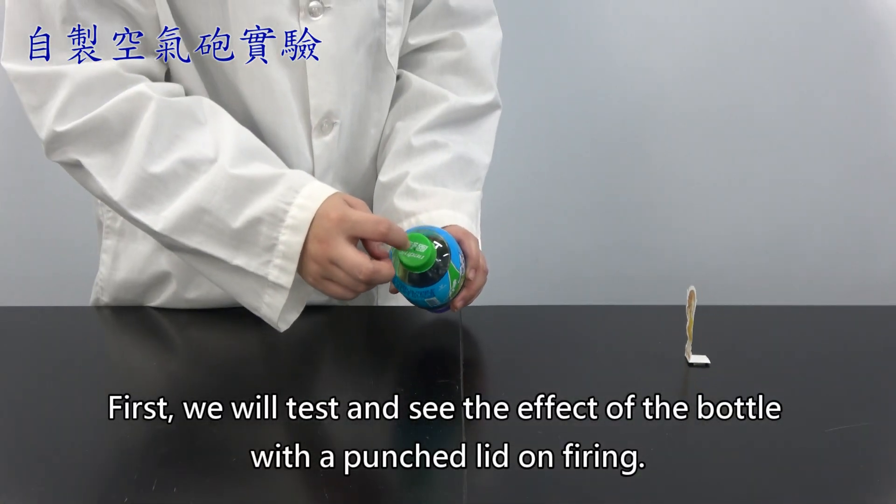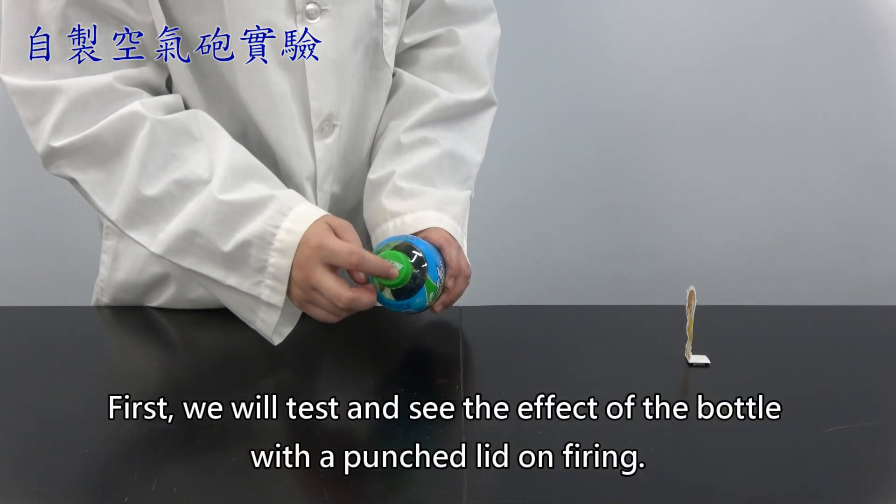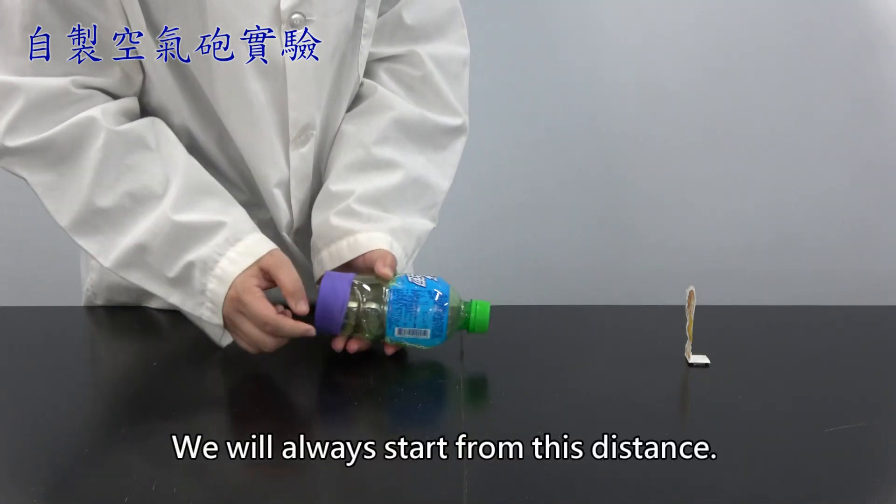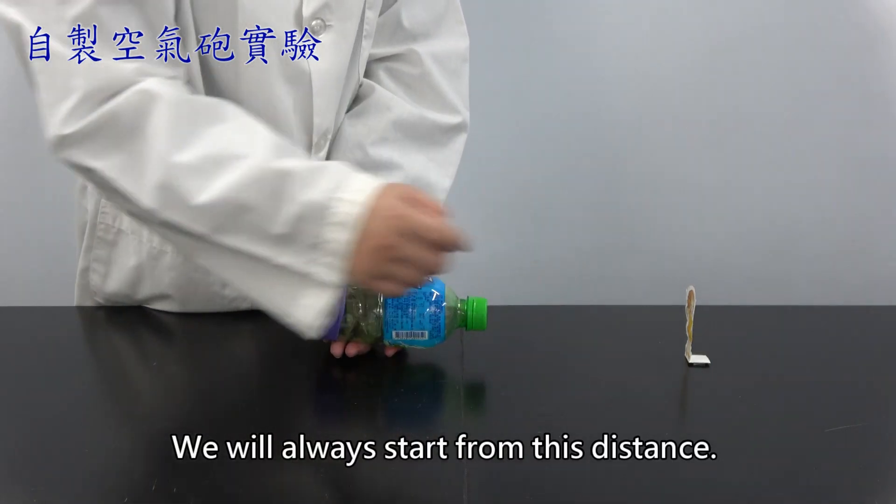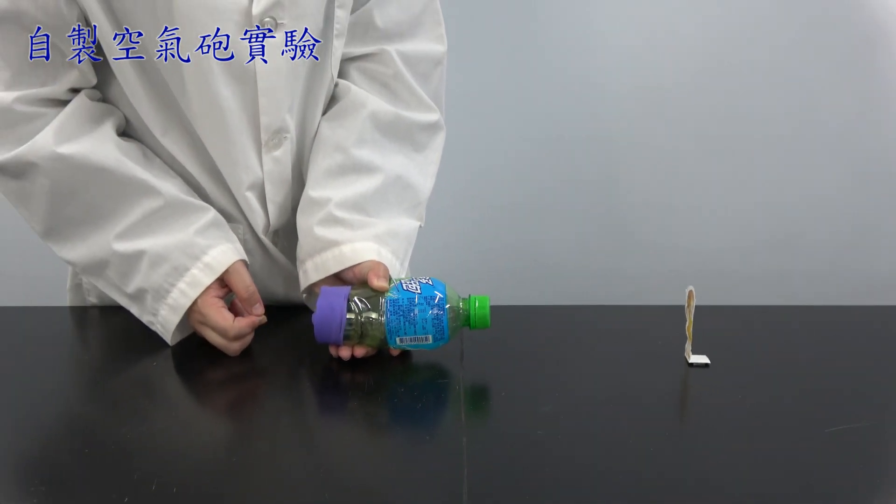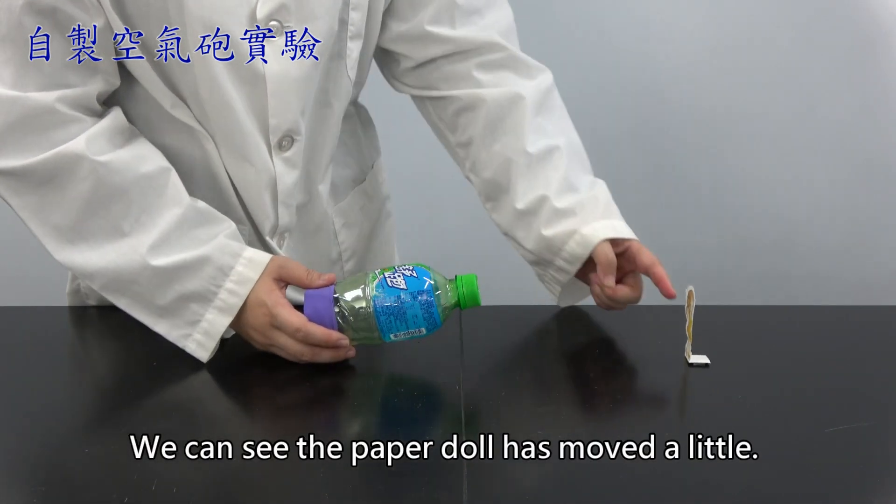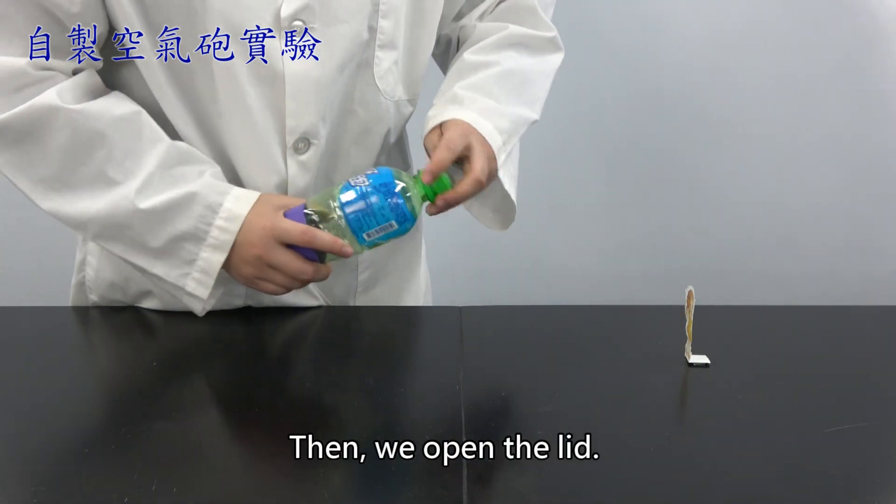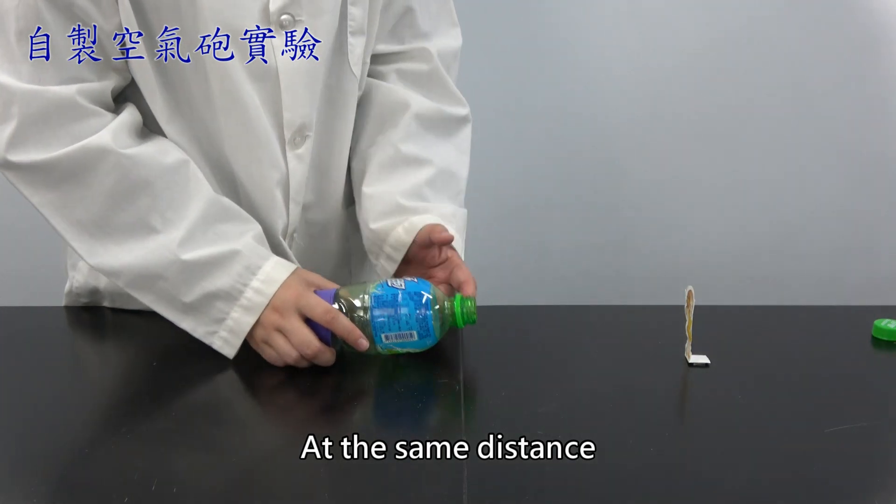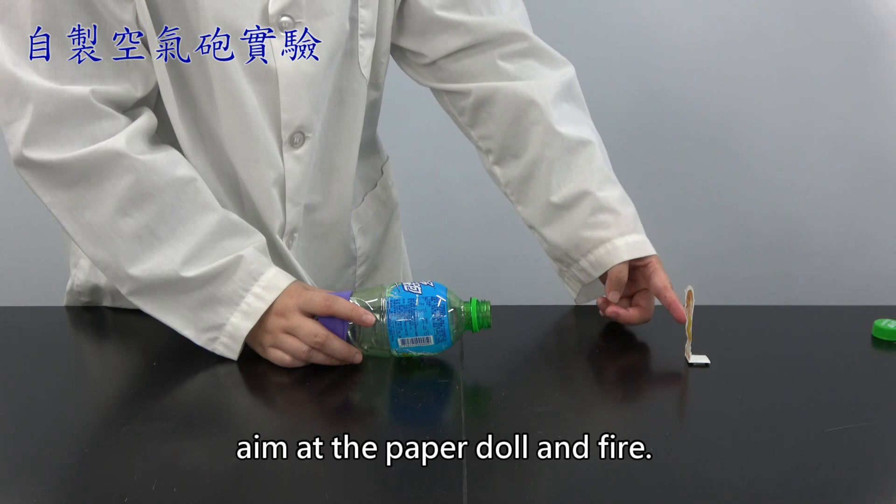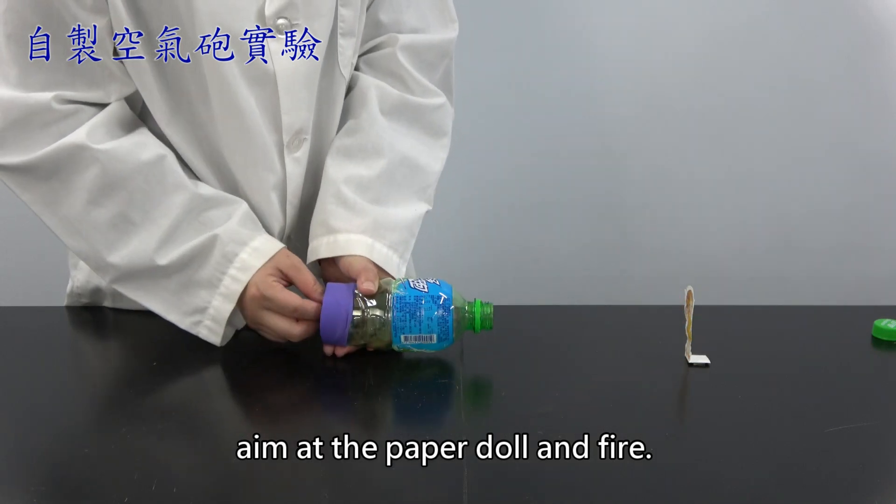First, we will test and see the effect of the bottle with the punched lid on fire. We will always start from this distance. Once we have aimed, fire! We can see the paper doll has moved a little. Then, we open the lid. At the same distance.